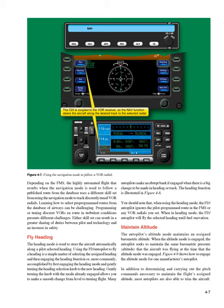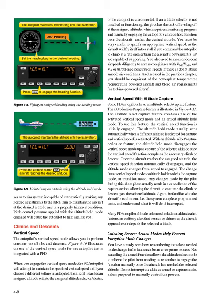Maintain Altitude. The autopilot's altitude mode maintains an assigned barometric altitude. When the altitude mode is engaged, the autopilot seeks to maintain the same barometric pressure altitude that the aircraft was flying at the time the altitude mode was engaged. In addition to determining and carrying out the pitch commands necessary to maintain the assigned altitude, most autopilots are also able to trim the aircraft. An auto-trim system automatically makes any needed adjustments to the pitch trim to maintain the aircraft at the desired altitude. Pitch control pressure applied with the Altitude Hold Mode engaged will cause the autopilot to trim against you.